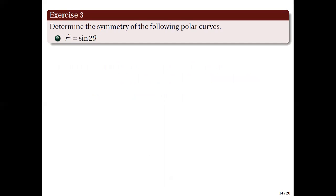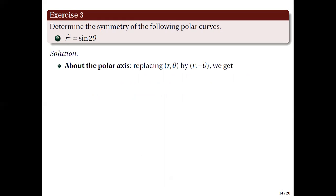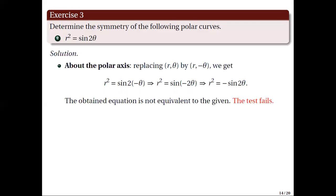For the second item, we have r squared equal to sine 2 theta. Testing symmetry about the polar axis by making the following replacement, we get r squared equal to sine of 2 times negative theta, which is equivalent to r squared equal to sine of negative 2 theta. Since sine is an odd function, this is equivalent to r squared equal to negative sine 2 theta. The obtained equation is not equivalent to the given, hence the test fails.